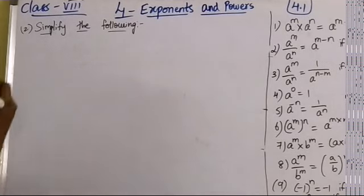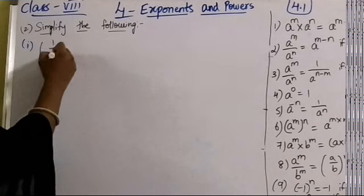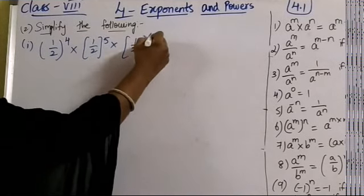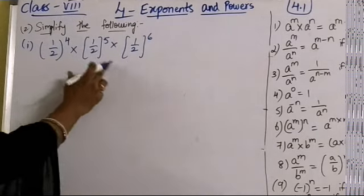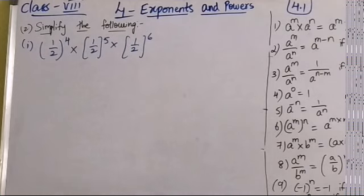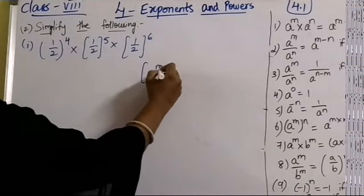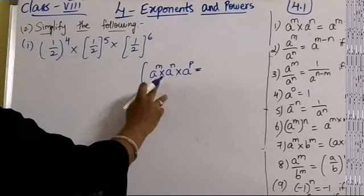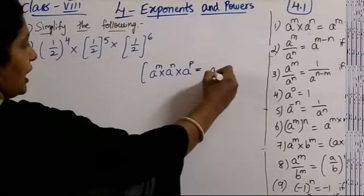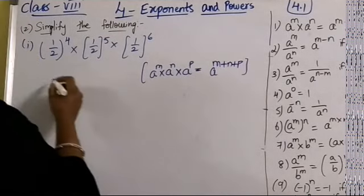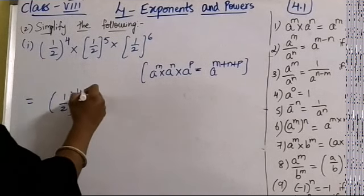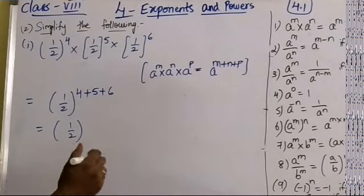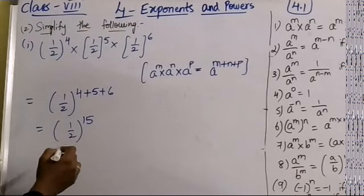Coming to the next question: simplify the following. First one: (1/2)⁴ × (1/2)⁵ × (1/2)⁶. Here the bases are the same and the powers are different, under multiplication. So we use the law a^m × a^n × a^p = a^(m+n+p), giving (1/2)^(4+5+6) = (1/2)^15 as the answer.